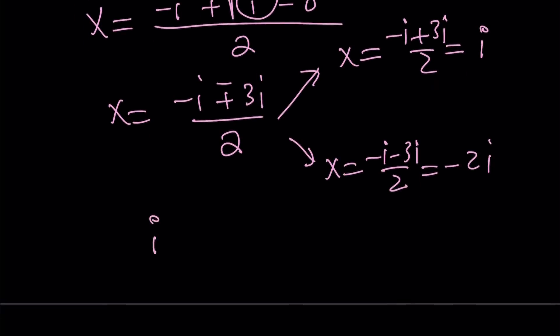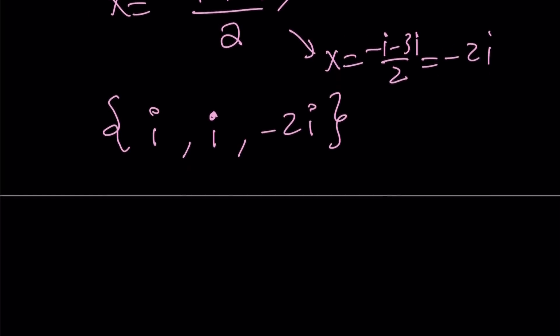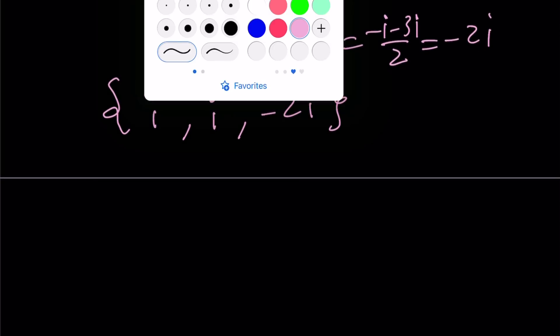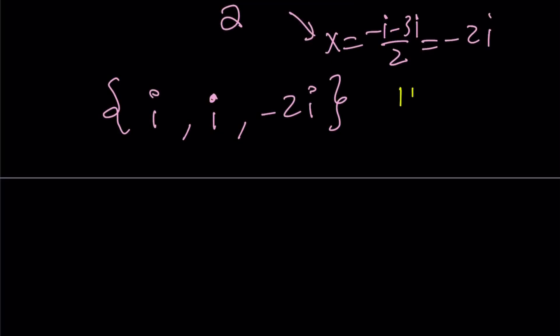So we already know that this is a solution, but x equals i just repeats. So the roots are i, i, and negative 2i. Obviously we are expecting three solutions, even though they might be repeating, because it's a cubic equation. And this brings us to the end of this video. Thank you for watching. I hope you enjoyed it. Please let me know. Don't forget to comment, like, and subscribe. I'll see you tomorrow with another video. Until then, be safe, take care, and bye-bye.